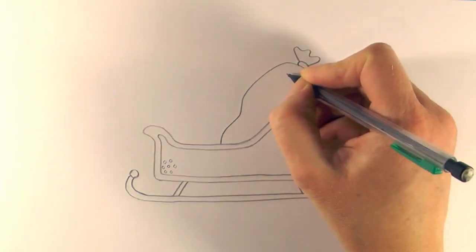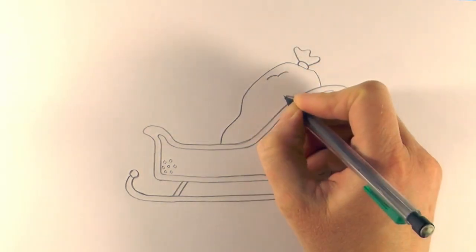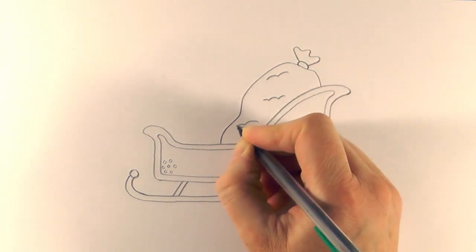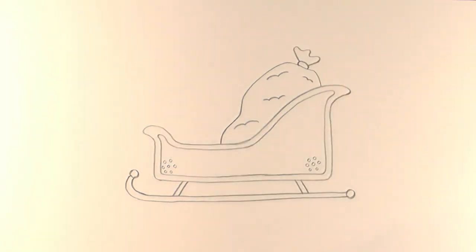And then just add a little bit more detail to the sack. We just kind of do a few kind of bumpy lines like that, just to show that the sack's got stuff inside. Like that.